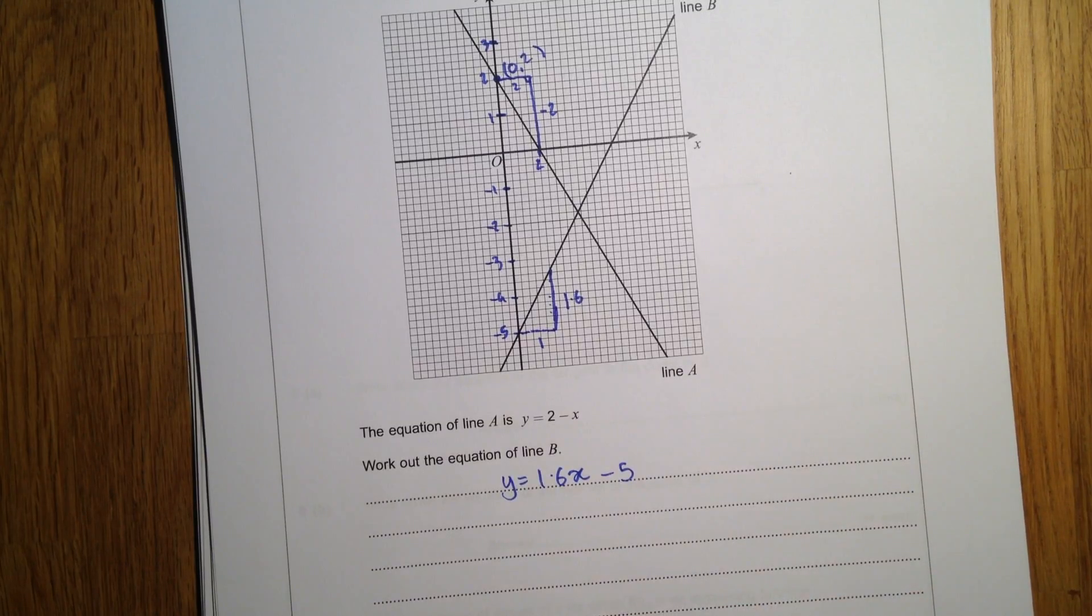So it is y equals 1.6x, and the y-intercept is negative 5. So there we are.